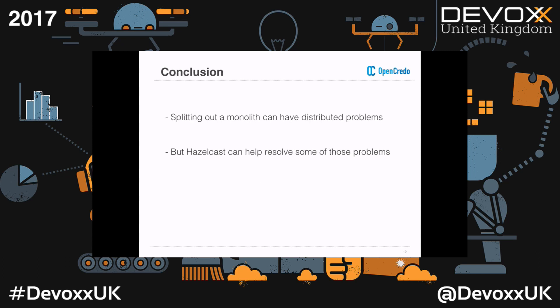Finally, it can be difficult to split out monoliths, especially when you have all the state shared, especially when you're talking about a UI layer. But something like Hazelcast can assist you with these sorts of things. Any questions? Thank you very much.